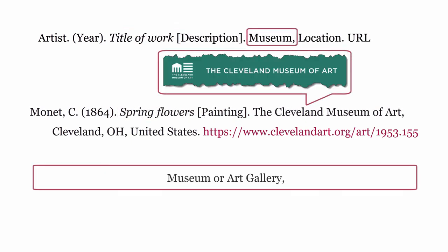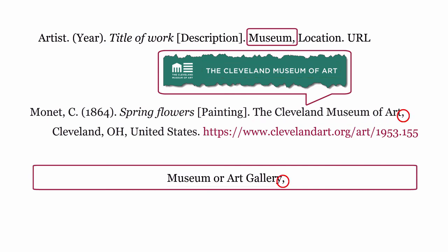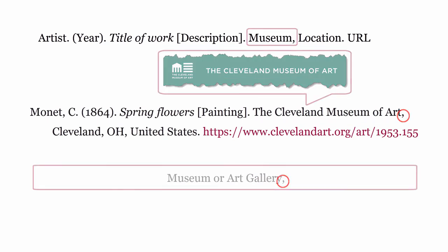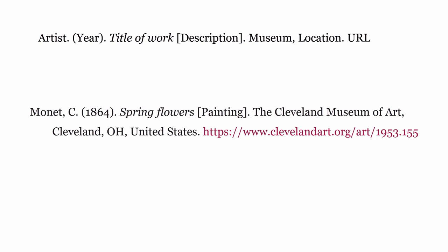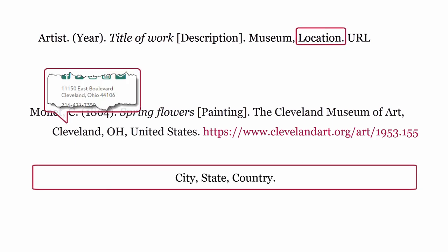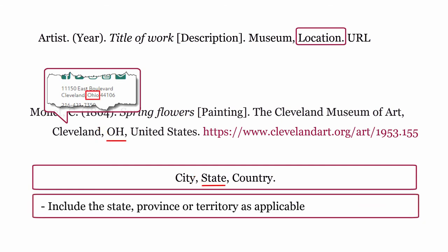Museum: this is where the artwork was viewed or displayed. Include the name of the museum or art gallery, then a comma. Location: this is the location of the museum or art gallery. Start with a city, then a comma, and include the state, province or territory as applicable, then a comma.